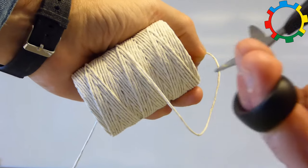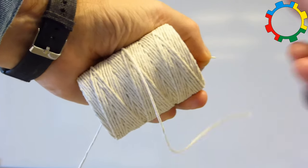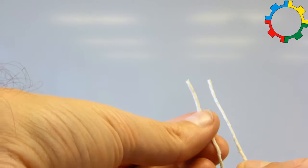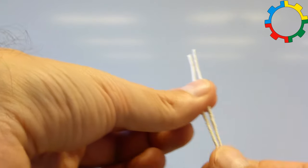Measure a piece of the string that is one arm span long, and cut it off. Cut the piece into halves.